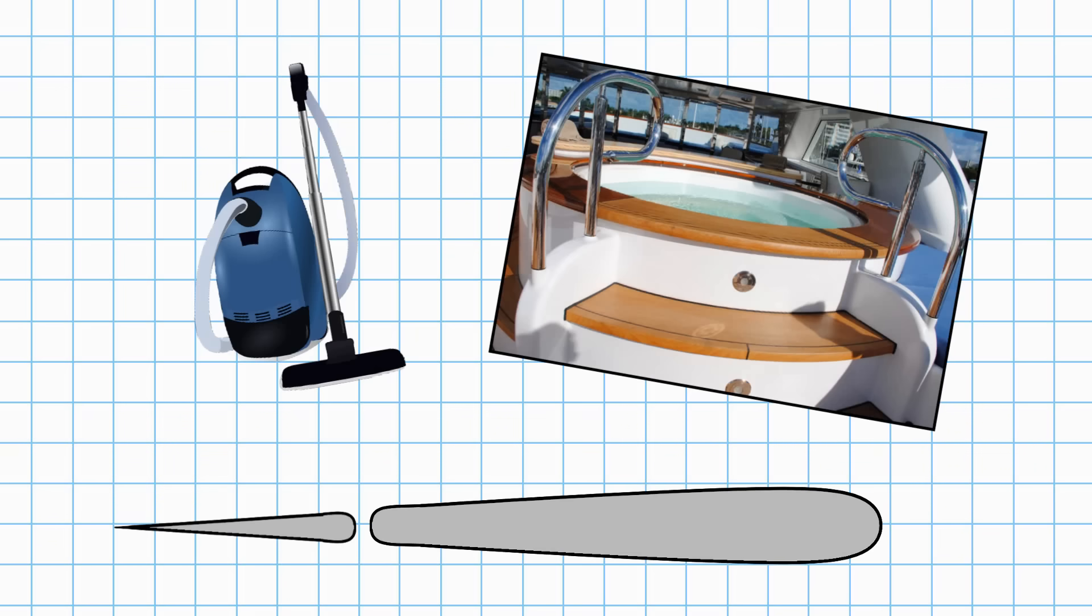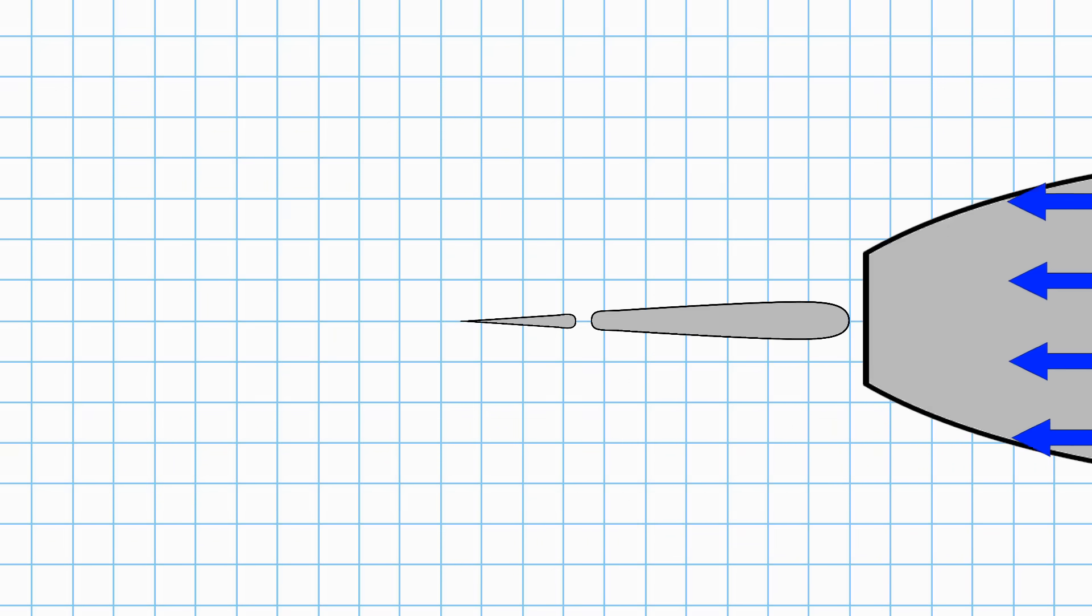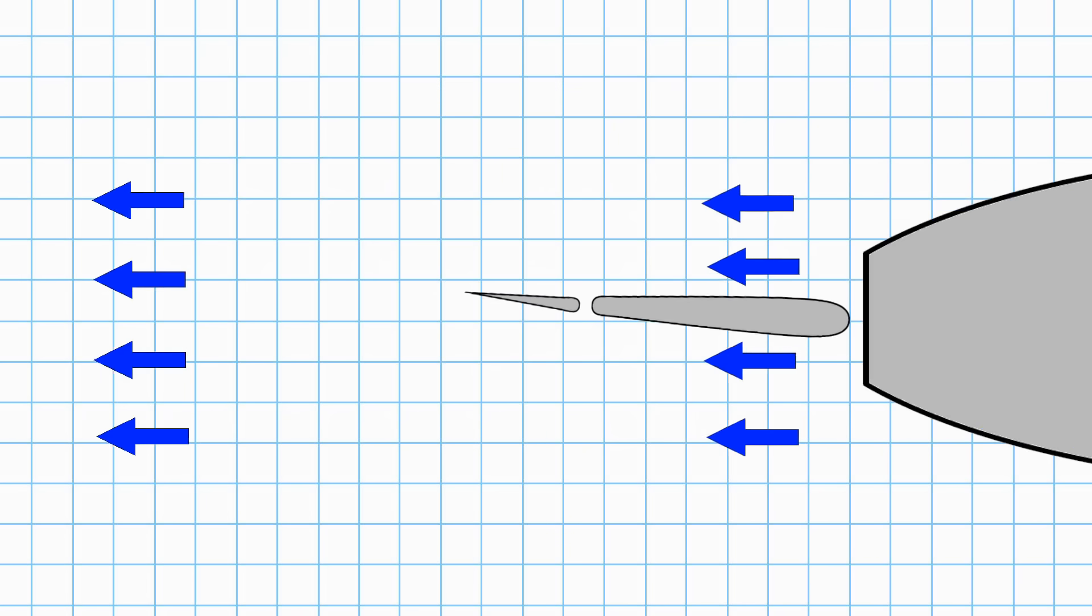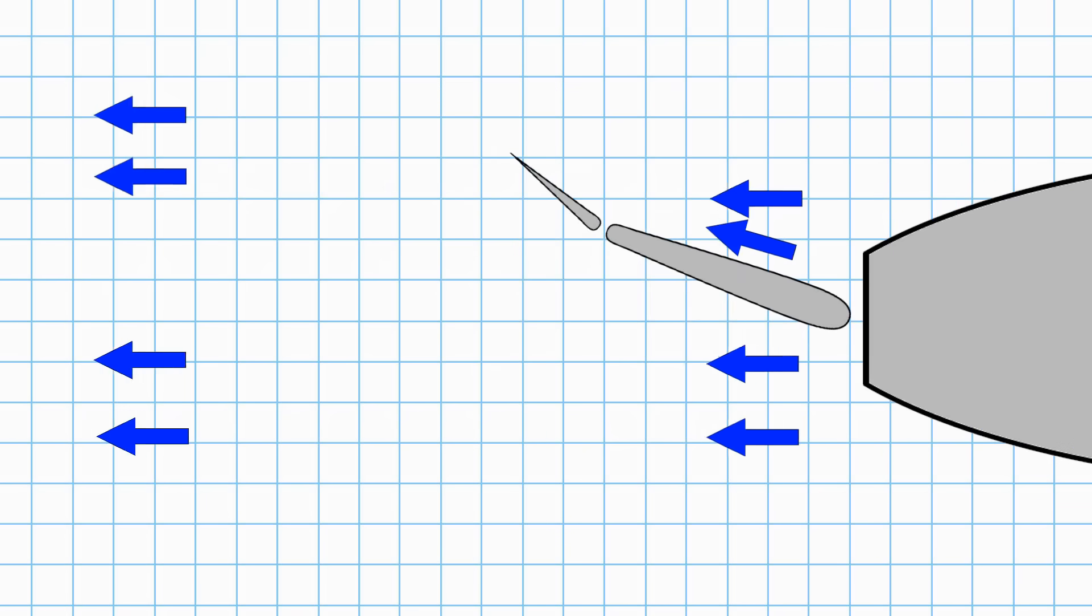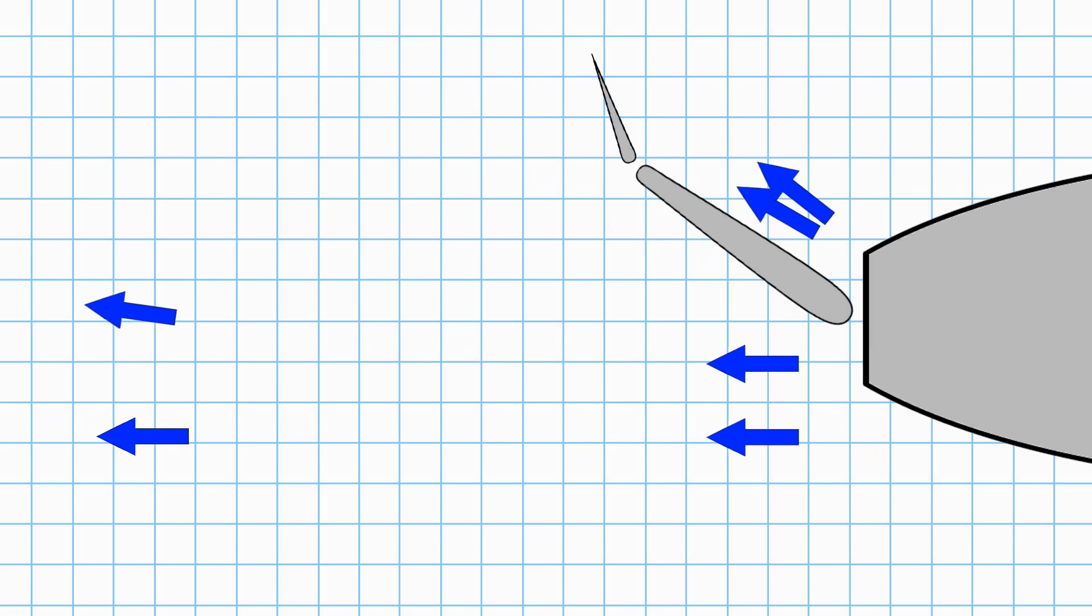When we look at the water flow diagram for a flap rudder, we can see again that amidships there's no turning force generated. When we turn the rudder, we have the same change in water flow as before. Much like a Schilling rudder, the flap rudder generates that additional increase at the tip. This time, however, the increase at the tip continues to increase even further the further you turn the rudder.